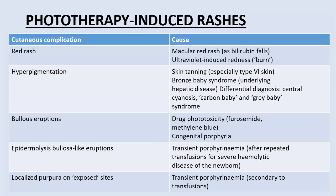Many children born with neonatal jaundice are given phototherapy, and this phototherapy causes certain problems in the neonate. These include a red rash — macular red lesions all over the body — which becomes more prominent as the yellow color fades as bilirubin reduces. Ultraviolet light-induced burns may also appear red.